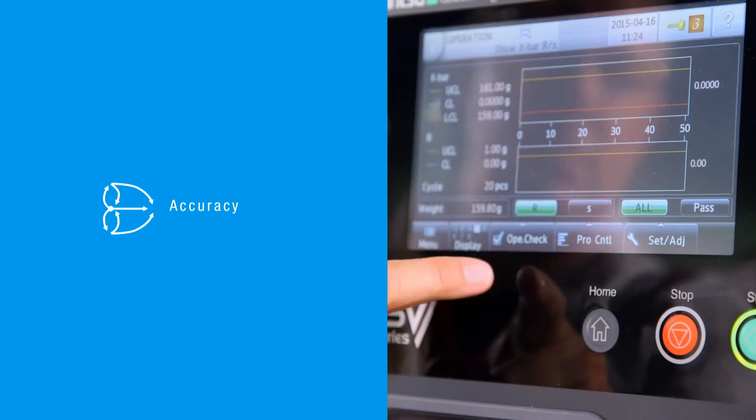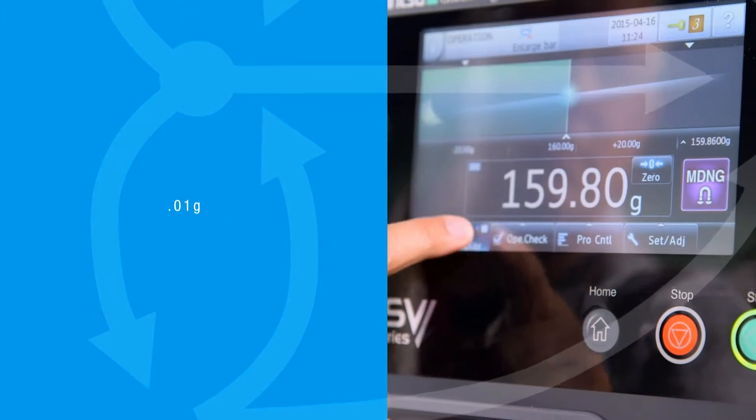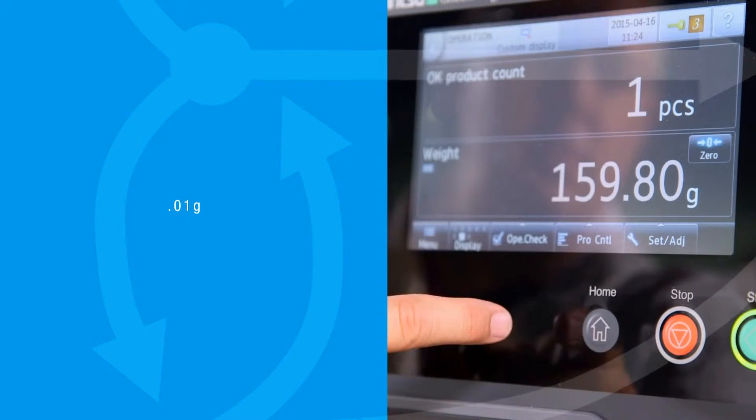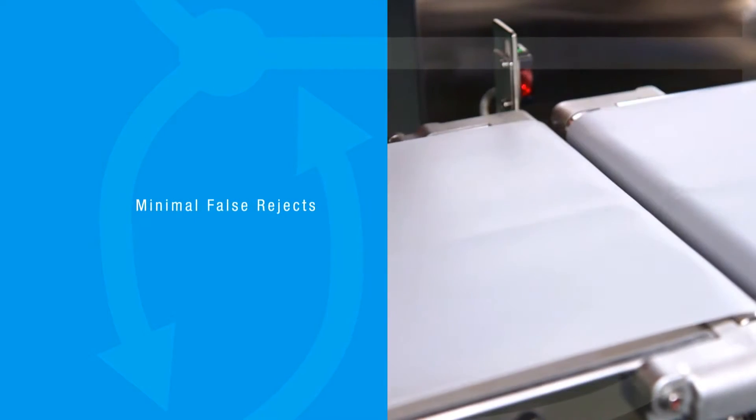Anritsu offers the highest accuracy in the industry at 0.01 grams. This provides a versatile and flexible means to minimize false rejects and reduce product giveaway, resulting in significantly improved ROI.